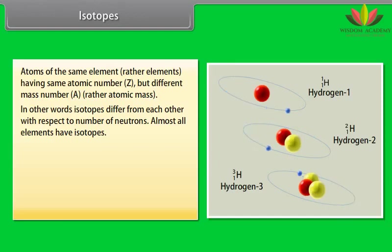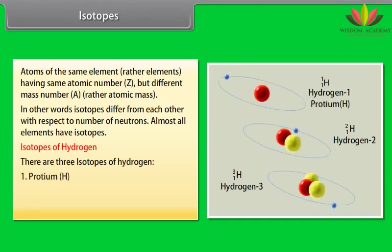Almost all elements have isotopes. Isotopes of Hydrogen. There are three isotopes of Hydrogen: Protium, Deuterium, and Tritium.